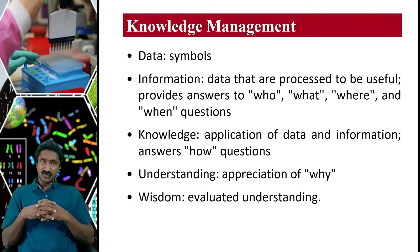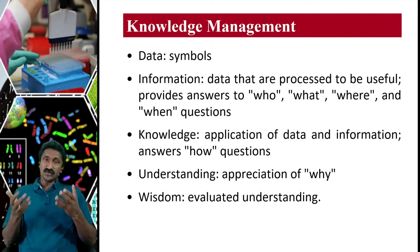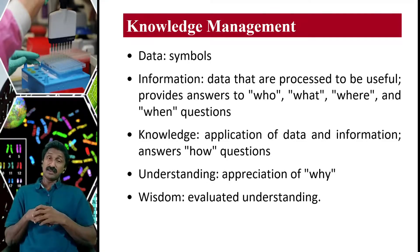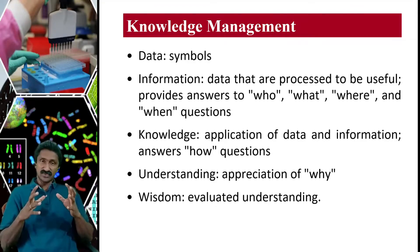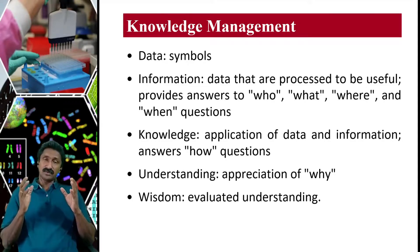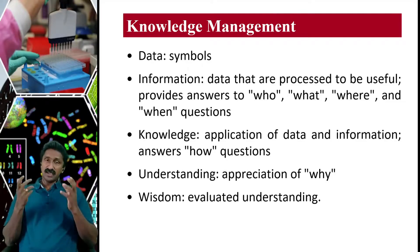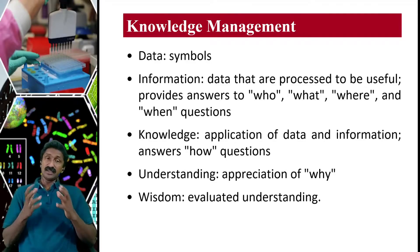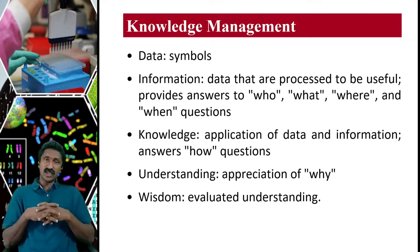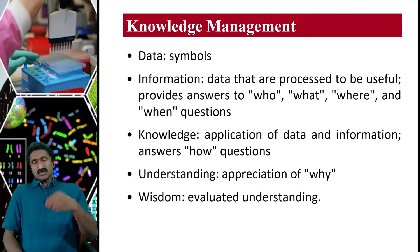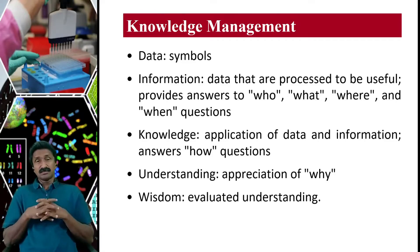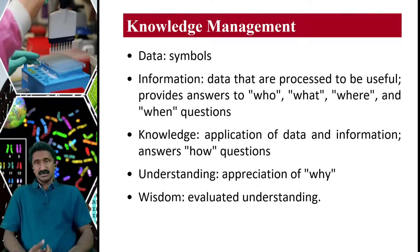Knowledge allows you to answer 'how' and 'why' questions — a higher order because you understand things and can appreciate why they happen. This is possible when you properly generate information, understand it, and ask how things are happening. Wisdom is an evaluative understanding — it is again a higher order of knowledge management.